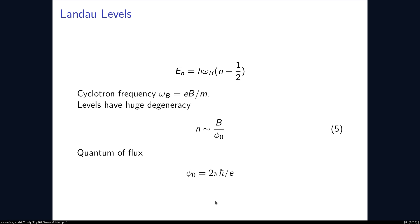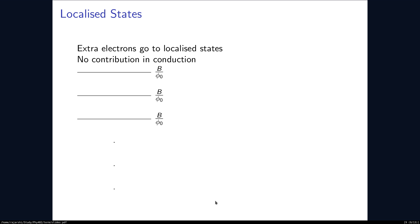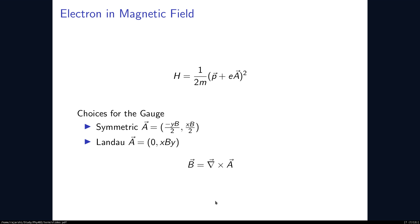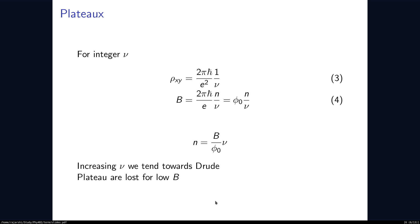When exactly nu of the energy levels are completely filled, then we find the predictions by the experiment. Rho is fixed and B is fixed.